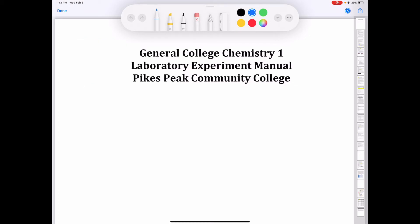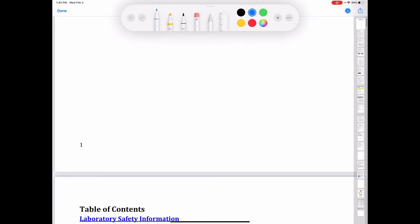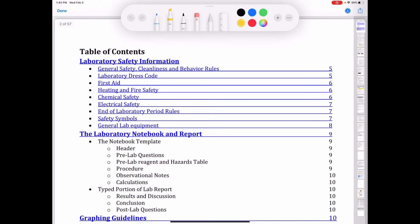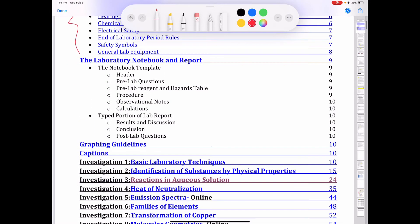Okay, so the first thing you're going to want to do is open up the Inquiry Lab Manual, which is found on our class's D2L page under the content folder and the lab portion. You're going to want to read the first parts of the Inquiry Lab Manual. So if you go to the table of contents, I want you to read all of the safety information. And what we're going to focus on right now for the next few minutes in this video is the laboratory notebook and report.